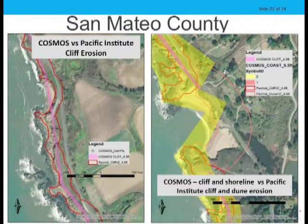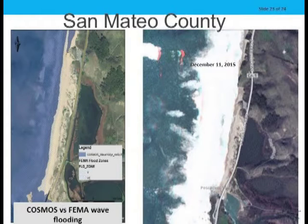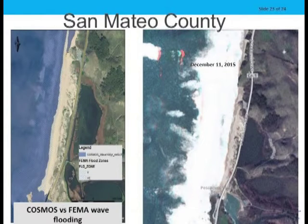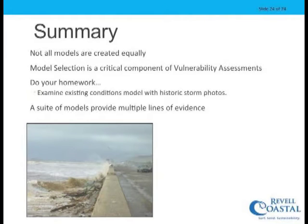In San Mateo, comparing Cosmos and Pacific Institute, the calculations in the model are probably very accurate for that spot, but when combined they don't represent the sinuosity and difficulty of the coastline. Adding in the shoreline change component and comparing mean high water variability from Cosmos with the Pacific Institute dune erosion — we're looking at apples and oranges. How we interpret this information for policy decisions is critical. We need good model selection, multiple sources of information, more monitoring, and improved resolution for neighborhood-scale application.